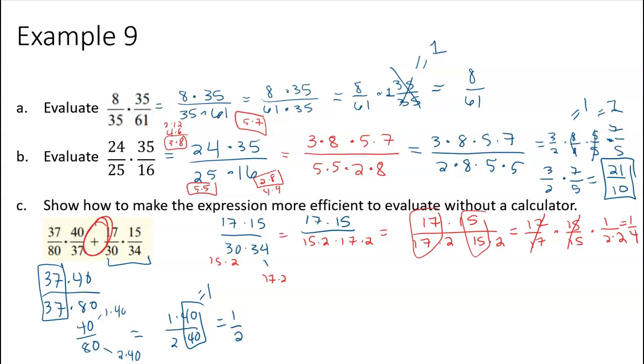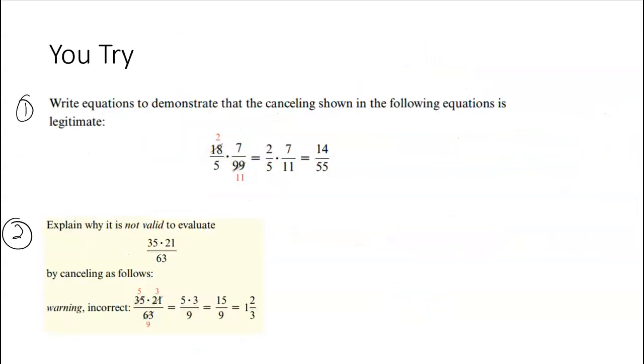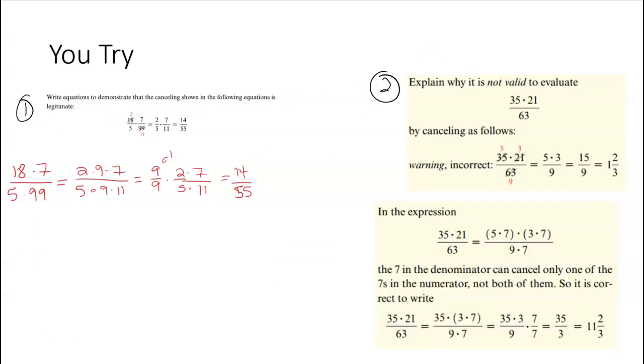So remember, originally they're adding. So this fraction simplified to 1 half, and this fraction simplified to 1 over 4. So now we're saying 1 half plus 1 over 4. And they didn't say to evaluate it. They just said show how to make it more efficient to evaluate. Go ahead and give these a try. Press play when you're ready to see the solution. And that concludes section 9.1.